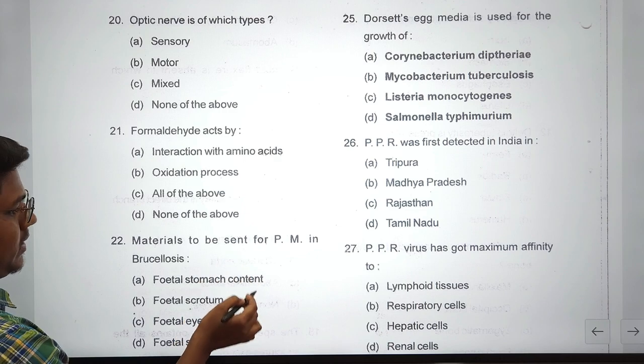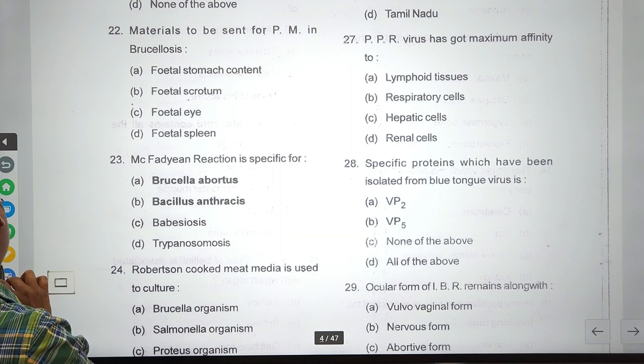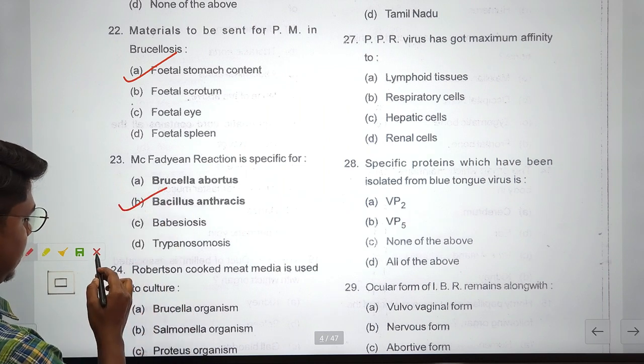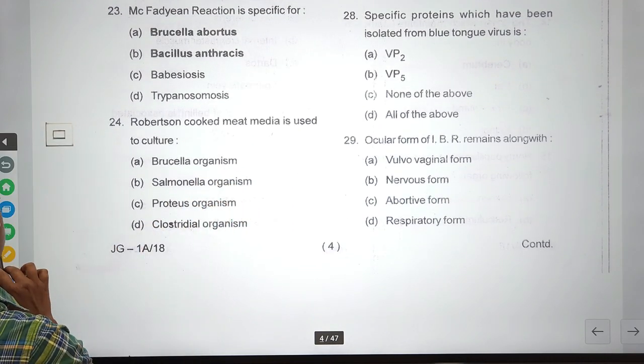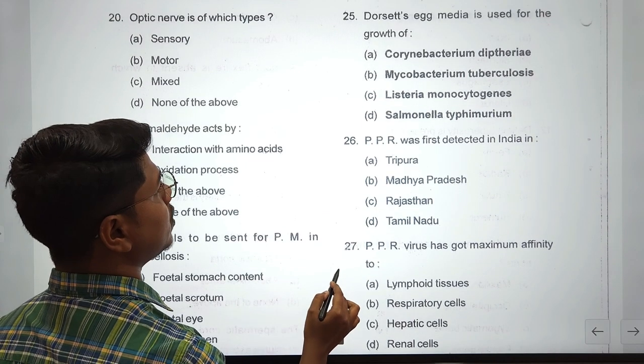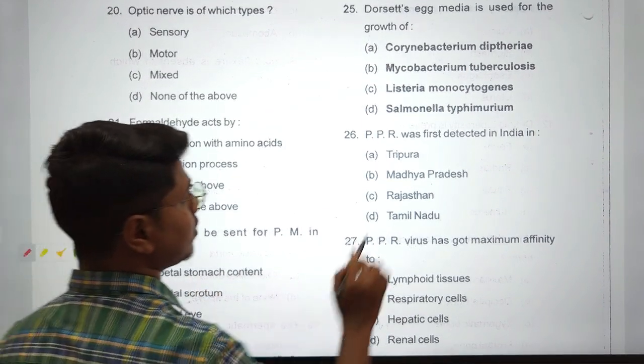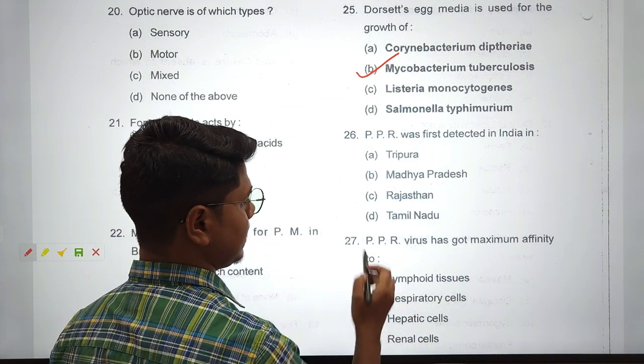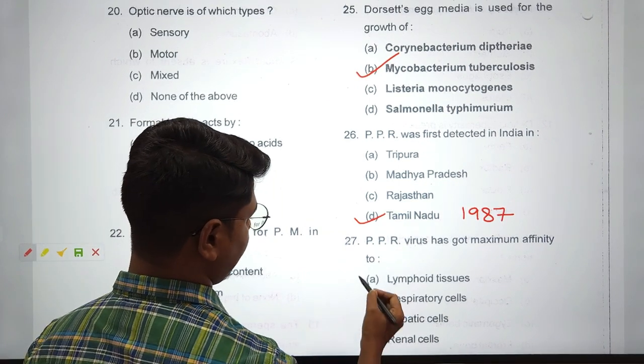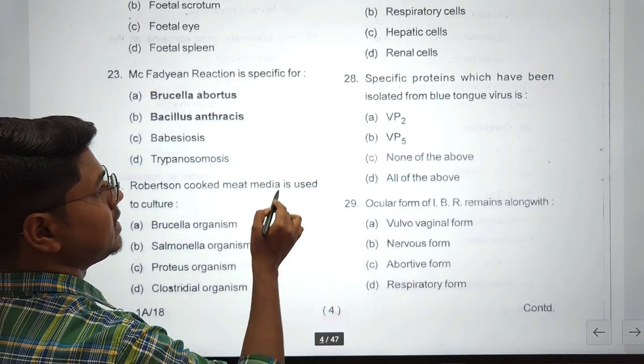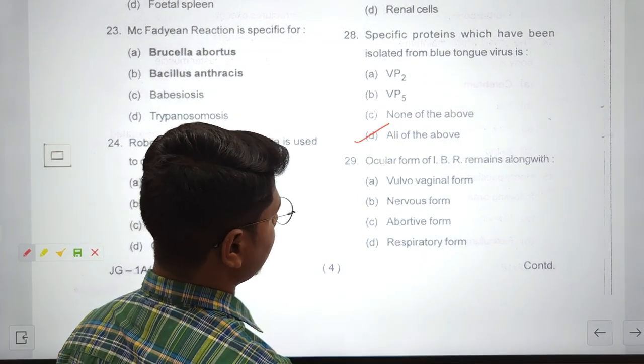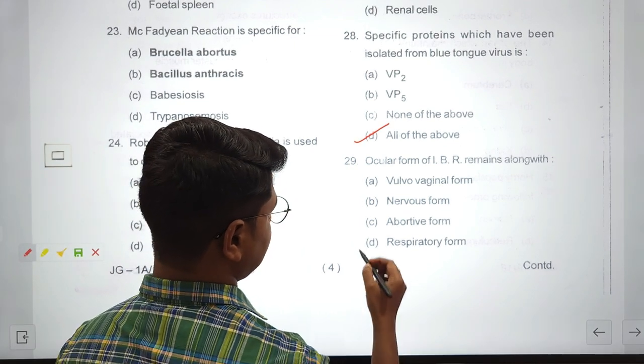The term duct of Bellini is associated with kidney. Optic nerve is sensory type - second cranial nerve. Formaldehyde acts by alkylation of amino group and sulfhydryl group, so interaction with amino acids. Materials to be sent for PM in brucellosis is fetal stomach content - very classical question. McFadyean reaction is for Bacillus anthracis. Robertson's cooked meat medium is used for culture of anaerobic bacteria, that is Clostridium organisms. Dorset's egg media is used for Mycobacterium tuberculosis.